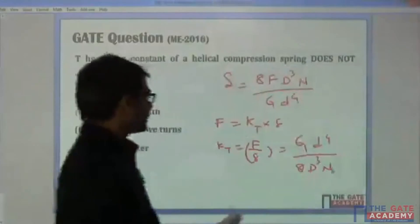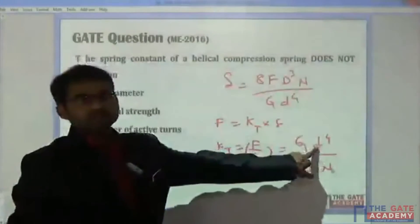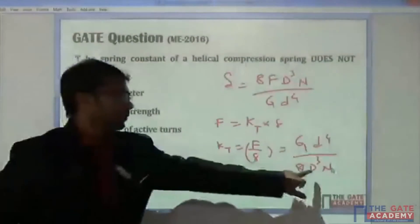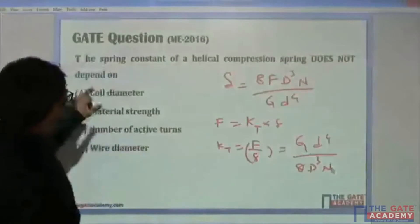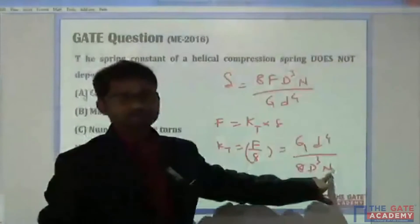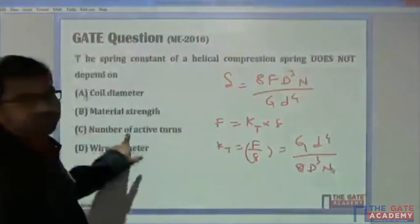We see that it is depending upon small d, that means wire diameter, it is depending upon capital D, that means coil diameter, and also capital N, that means number of active turns.